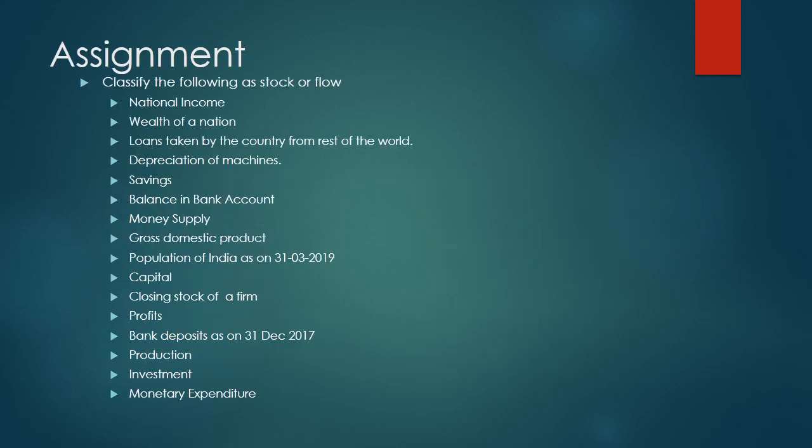Children, this is an assignment for you. Following is a list of items. Classify them as stock or flow and assign a reason for your answer. For example, the first item is national income — classify it as stock or flow and state whether it is time dimensional or measured at a point of time or over a period of time. You can work it out for the remaining items as well. Thank you.